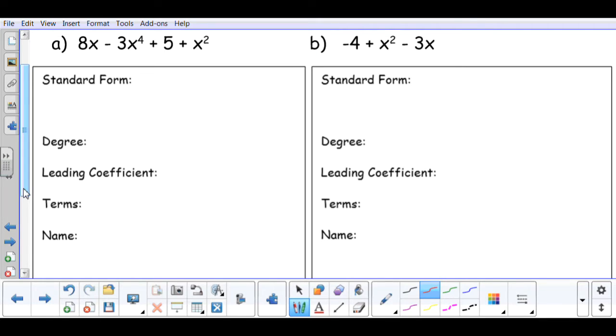So in A, I have 8x - 3x⁴ + 5 + x². To put this in standard form, I want the term with the highest exponent, which will be -3x⁴. Then I want the term with the second highest exponent, which will be my x², so I'll have +x². Then I would have +8x, and last, I will have my +5.